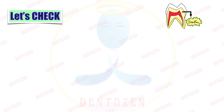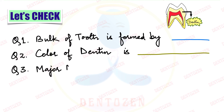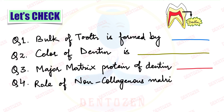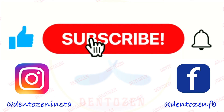Quick review questions: What is the bulk of the tooth made up of? What is the color of dentine? What is the major matrix protein of dentine? What is the role of non-collagenous matrix proteins of dentine — regulation of what? Share your answers in the comments below. Keep watching, keep learning, and keep smiling — good luck for your exam!